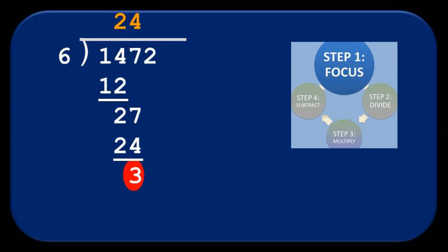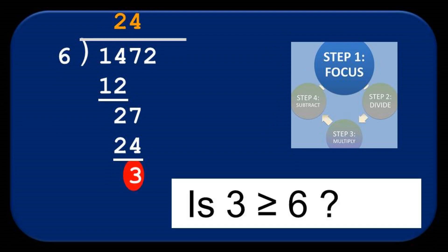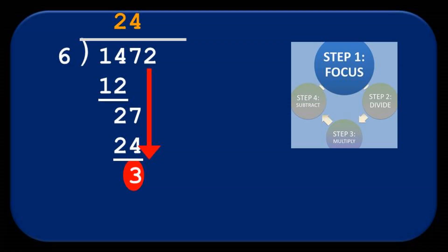Looking for our focus, we know that 3 cannot be it. It's not greater than or equal to 6. So, we pull down the last digit of the dividend, 2, which gives us a new focus of 32.